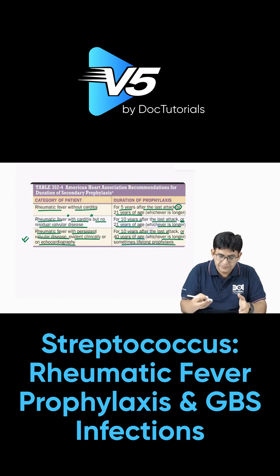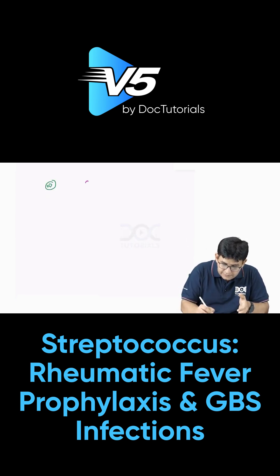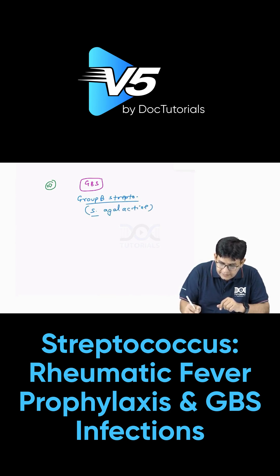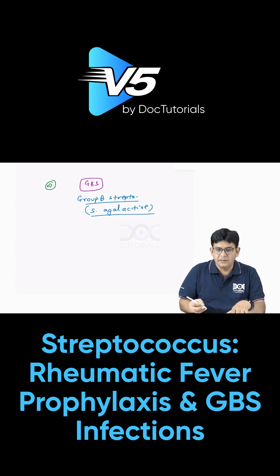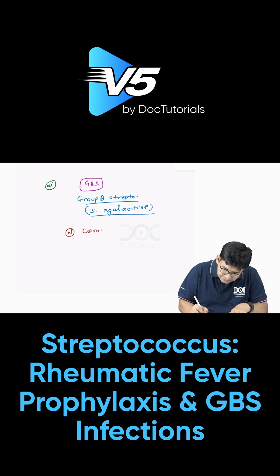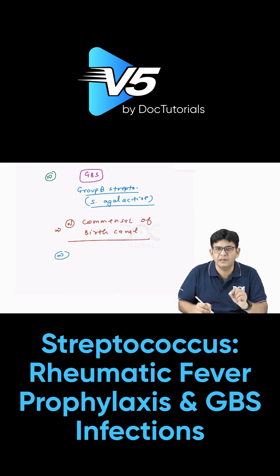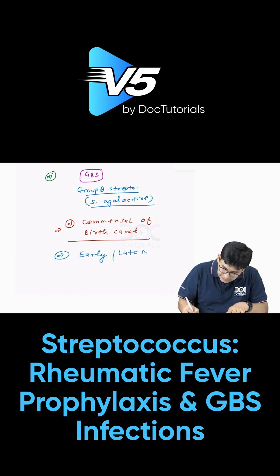Now coming back to streptococcus — talking about GBS, which stands for Group B Streptococcus, also known as Streptococcus agalactiae. This bacteria is a normal commensal of the birth canal, not in every female but in some. When a child passes through the birth canal, it can acquire infection from this bacteria and develop either early or late neonatal meningitis.